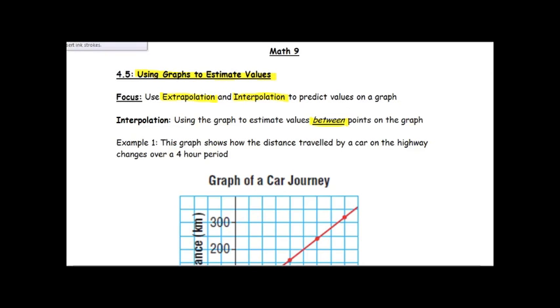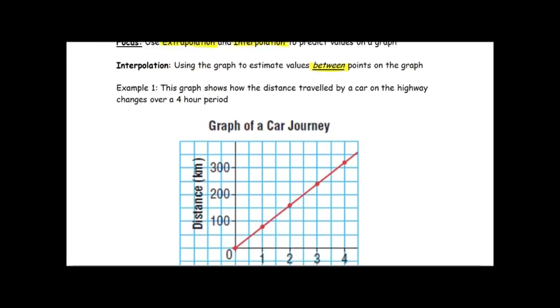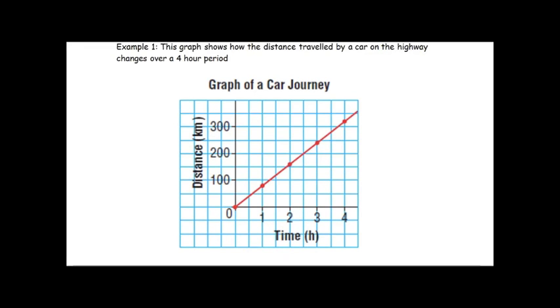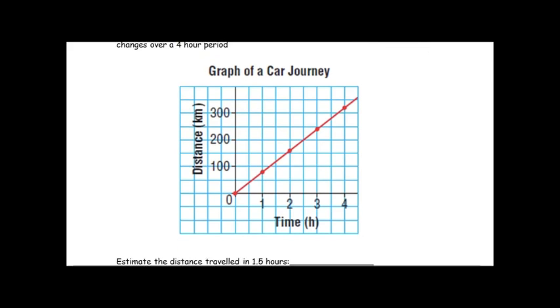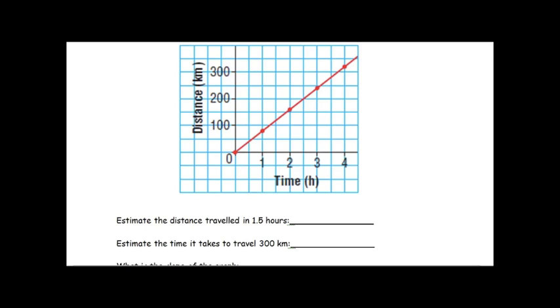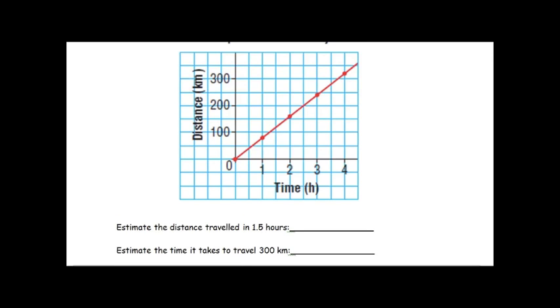Here we have an example where we have the graph showing the distance traveled by a car on the highway, how that changes over a four-hour period. We're asked to estimate the distance traveled in 1.5 hours and estimate the time it takes to travel 300 kilometers.